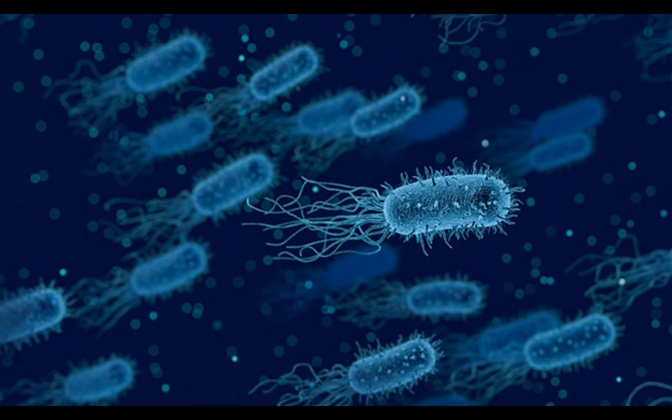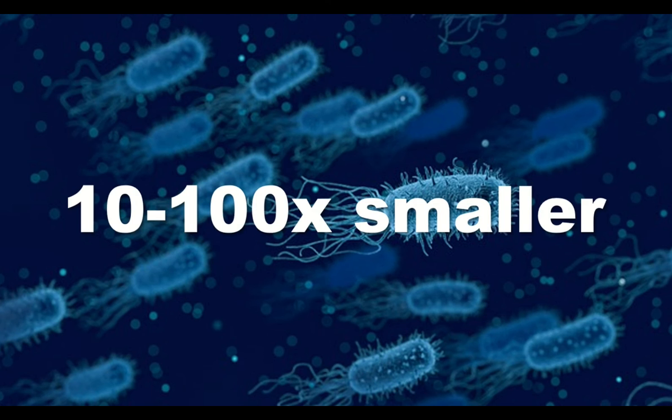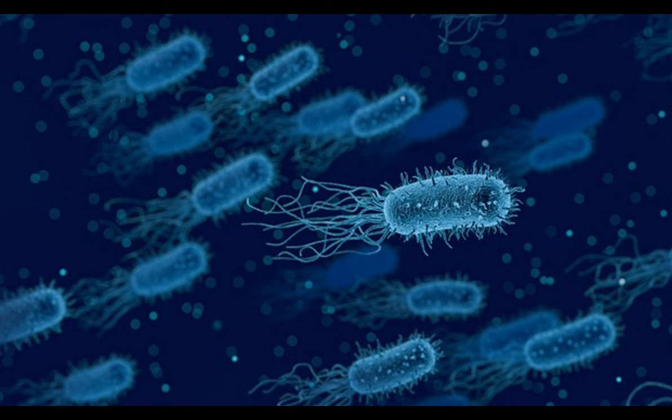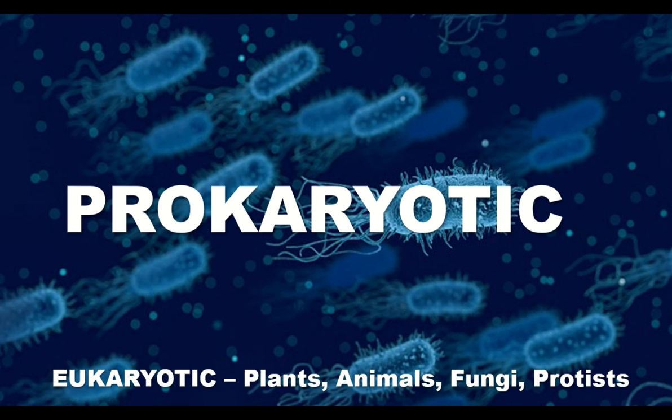Bacterial cells are about 10 to 100 times smaller than animal cells. They are prokaryotic, which means they do not have a membrane-bound nucleus. In fact, they don't contain any membrane-bound organelles at all. This is opposed to eukaryotic organisms like plants, animals and fungi.